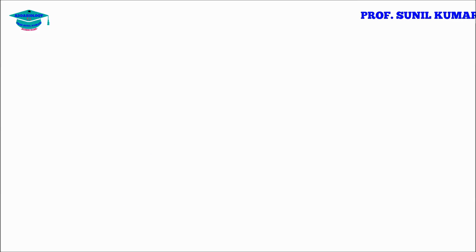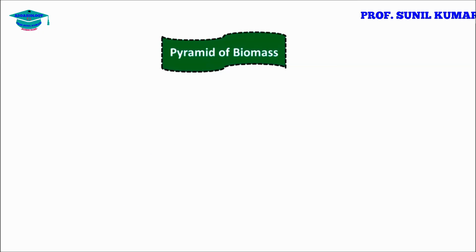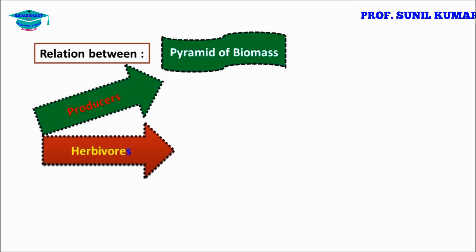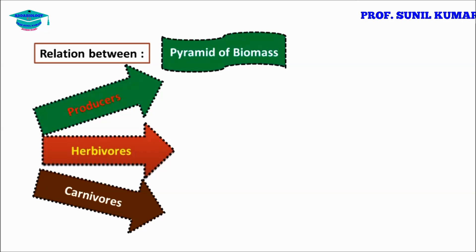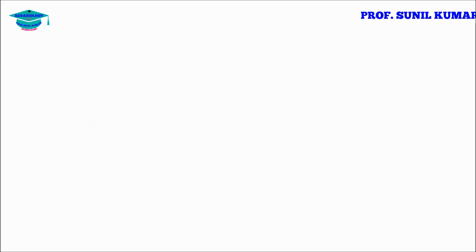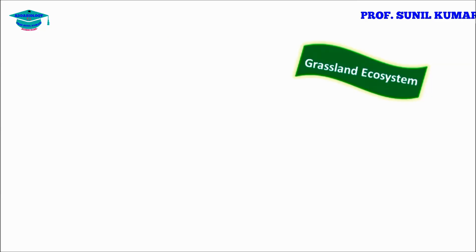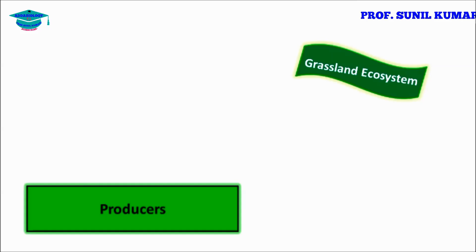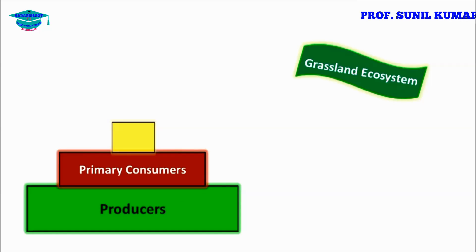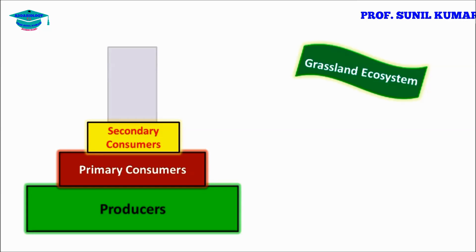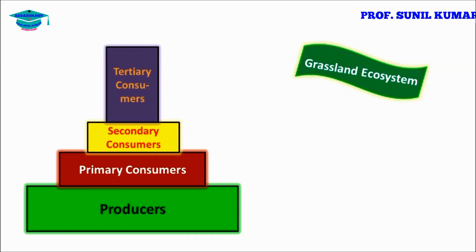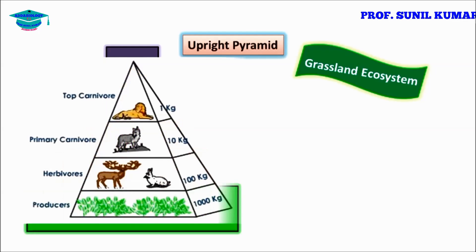When we talk about pyramid of biomass, it is basically the relation between producers, herbivores, and carnivores with respect to biomass. In the grassland ecosystem, there will be more producers, then primary consumers, then secondary consumers, and least will be tertiary consumers. The pyramid of biomass in grassland is always upright.